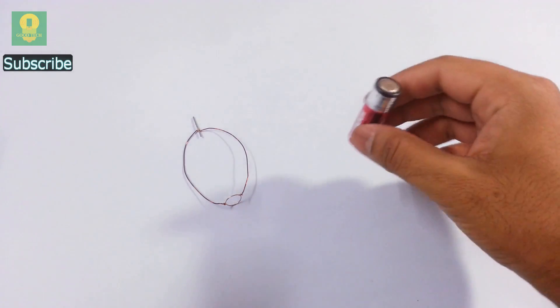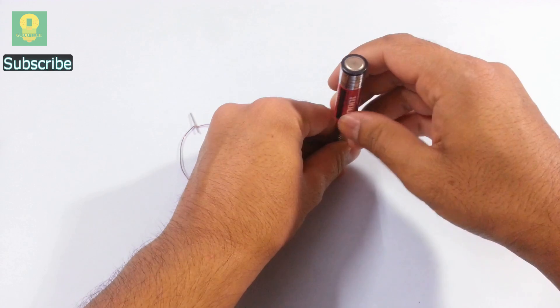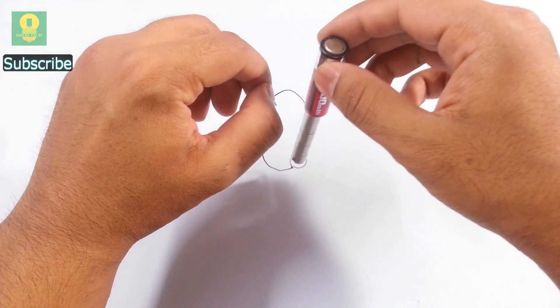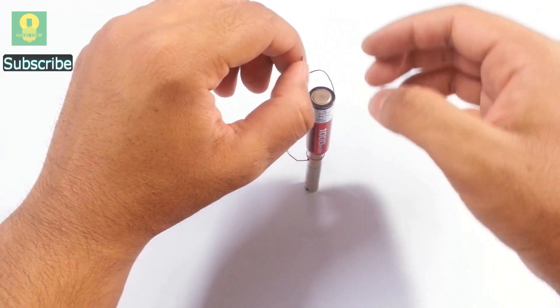Now place a cell over the stack of neodymium magnets. Place the coil over the cell such that the pin connects with the cell terminal and the loop gets connected to the magnets.